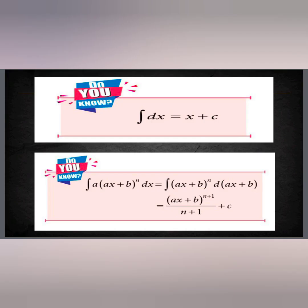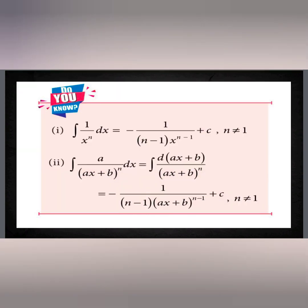We have a few more formulas we will use in the sums. ∫dx = x + c. Remember, in differentiation when we differentiate a constant we get 0, but it is totally different in integration — when we integrate a constant we get x. So these formulas we have to go through before doing the sums.